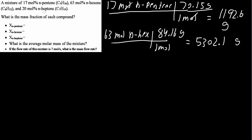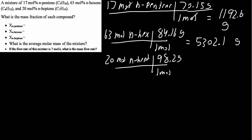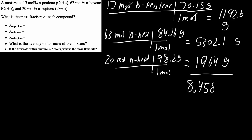Next we do the same for n-heptene. We have 20 moles of n-heptene, and one mole contains 98.2 grams, giving us 1964 grams. Adding all three components up, we get a total of 8458.6 grams. This is total grams, and now it's the easy part.